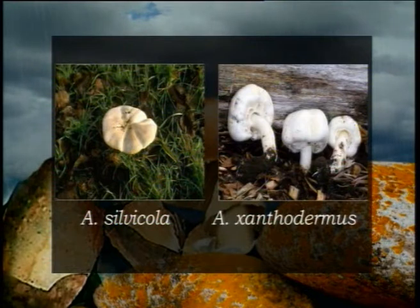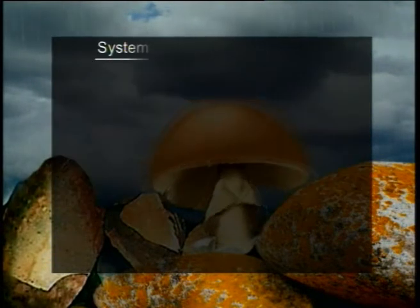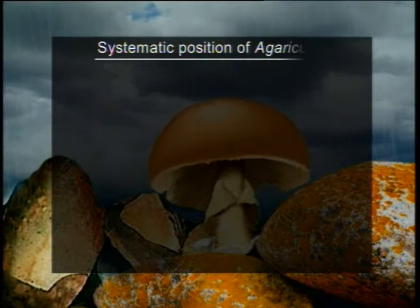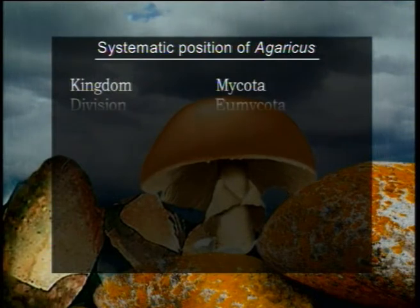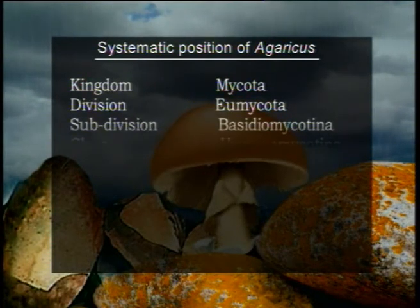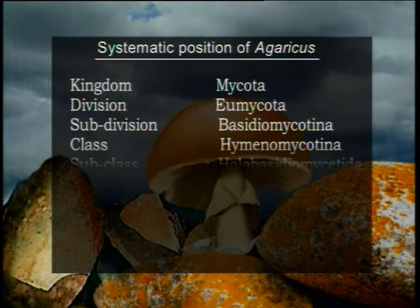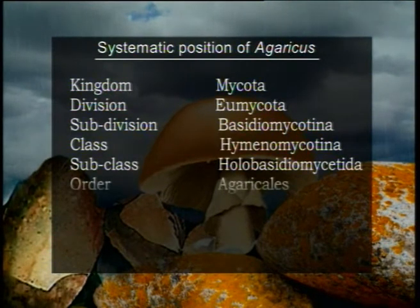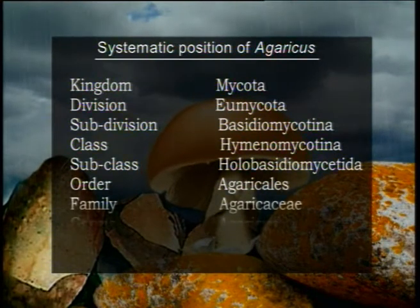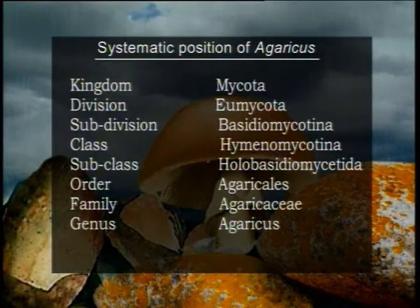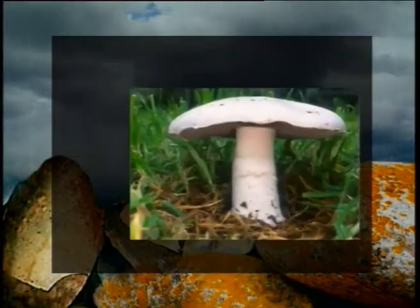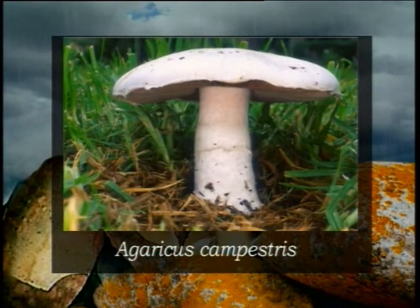The poisonous species of Agaricus are Agaricus silvicola and Agaricus xanthodermus. Agaricus belongs to the kingdom Mycota, division Eumycota, subdivision Basidiomycotina, class Hymenomycotina, subclass Holobasidiomycetidae, order Agaricales, family Agaricaceae, and genus Agaricus. The species selected for explaining the life cycle is the common edible mushroom Agaricus campestris, also known as the field mushroom or guild mushroom.